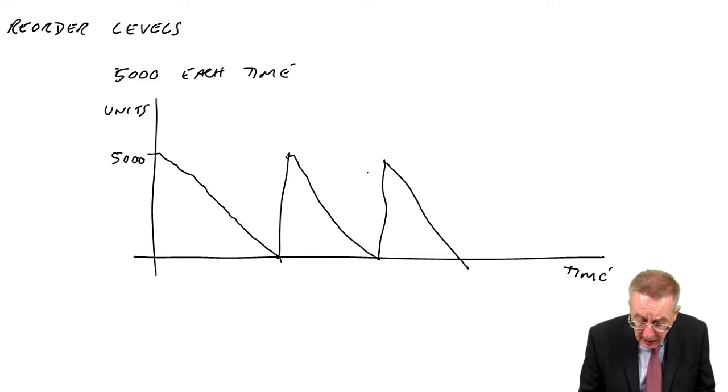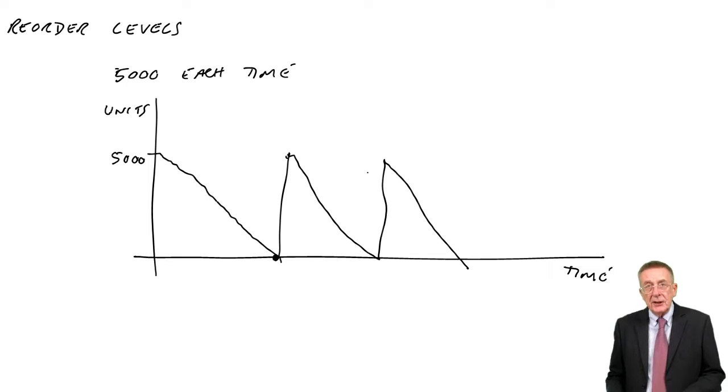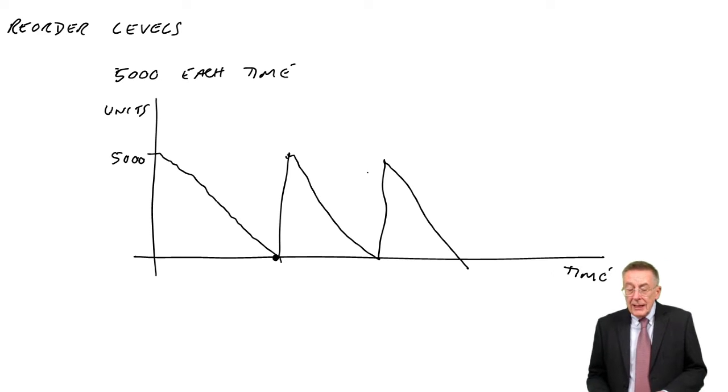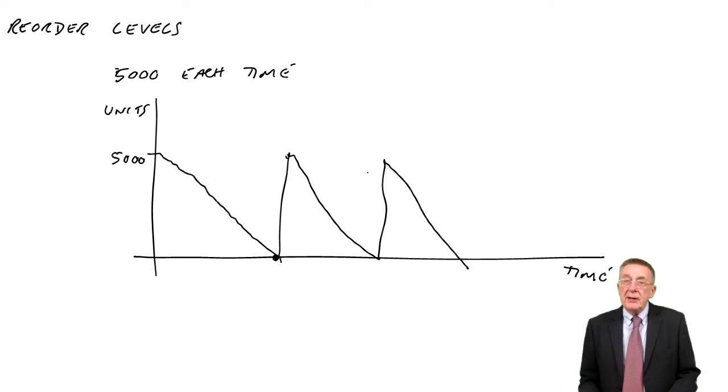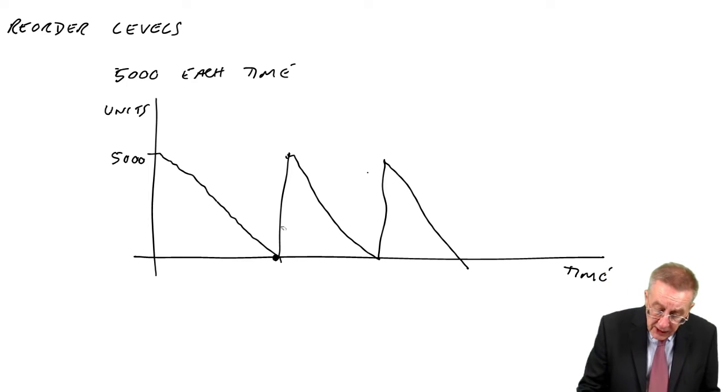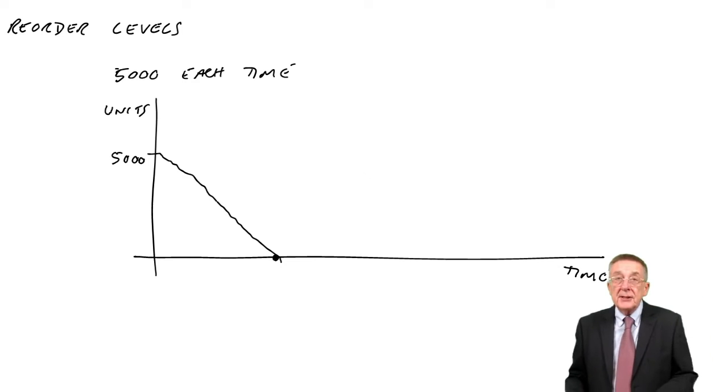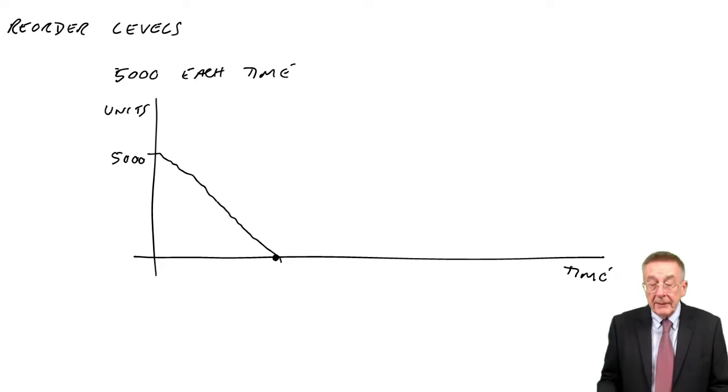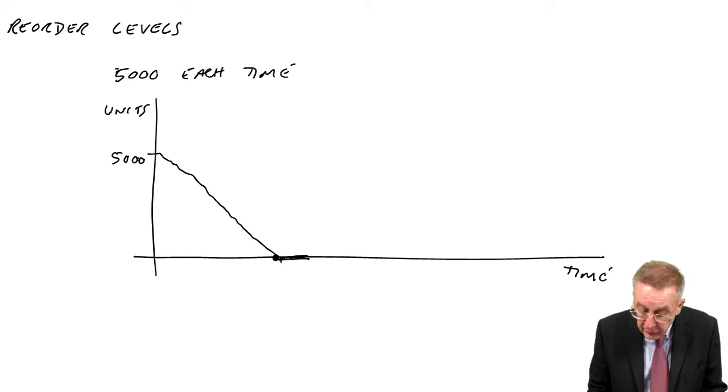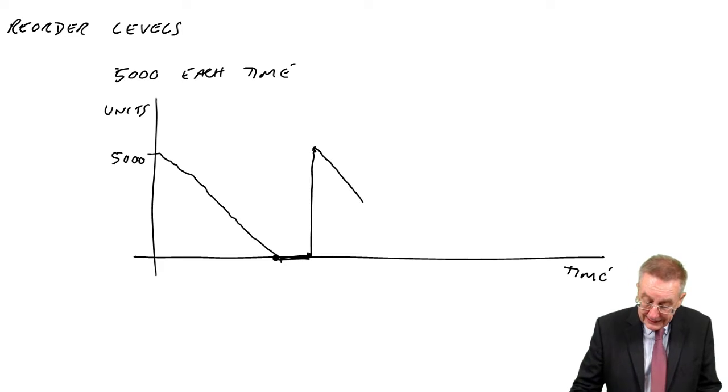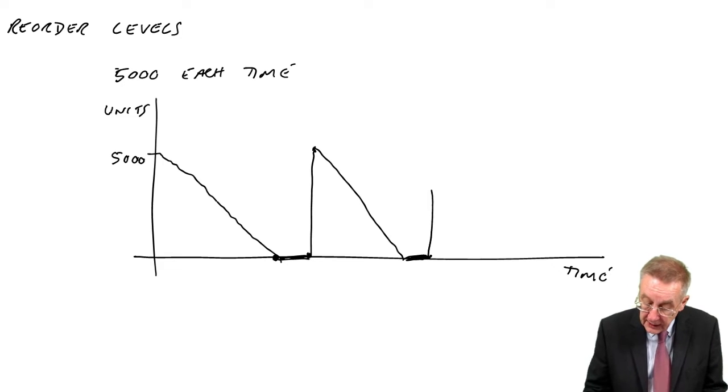However, there's just one thing here. In real life, you can't wait until the inventory falls to zero to place an order because there's going to be a delay always before we receive the order. The order's unlikely to arrive instantly. It may take two or three days for the supplier to deliver, and so if you've waited until it fell to zero before you've placed your order, and it takes three days for it to arrive, you're going to be left for three days with no inventory at all.